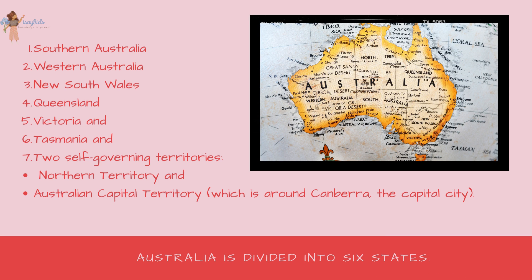Australia is divided into six states: Southern Australia, Western Australia, New South Wales, Queensland, Victoria, and Tasmania — and two self-governing territories: the Northern Territory and the Australian Capital Territory, which is around Canberra, the capital city.